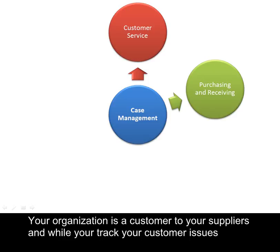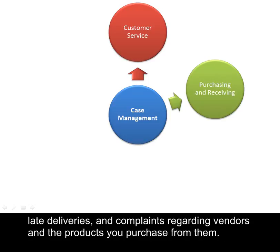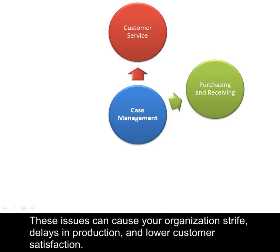Your organization is a customer to your suppliers, and while you track your customer issues, you should also track issues you have with your suppliers, such as incorrect or broken items, late deliveries, and complaints regarding vendors and the products you purchase from them. These issues can cause your organization strife, delays in production, and lower customer satisfaction.